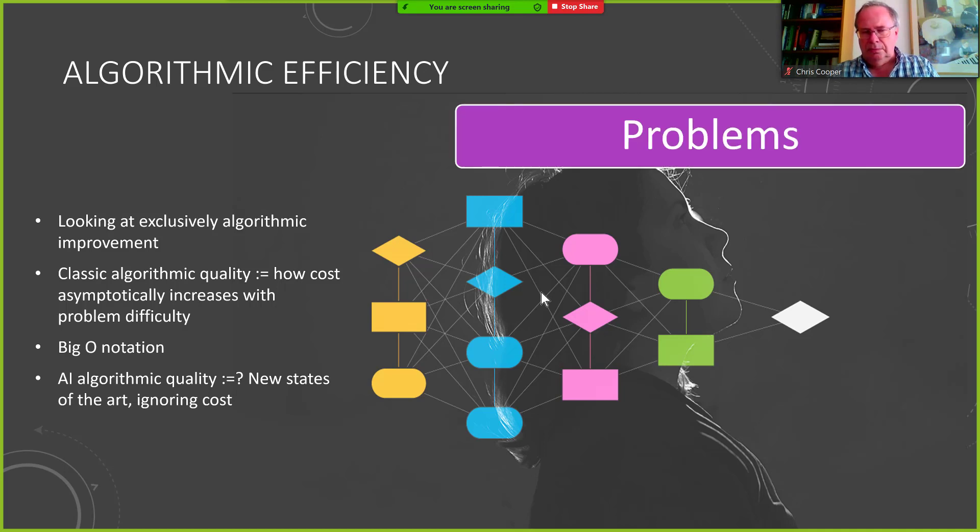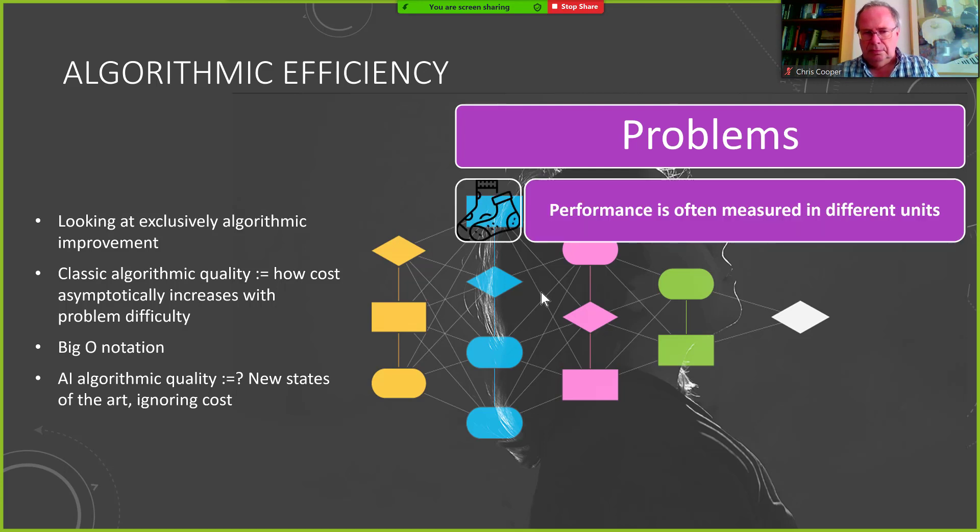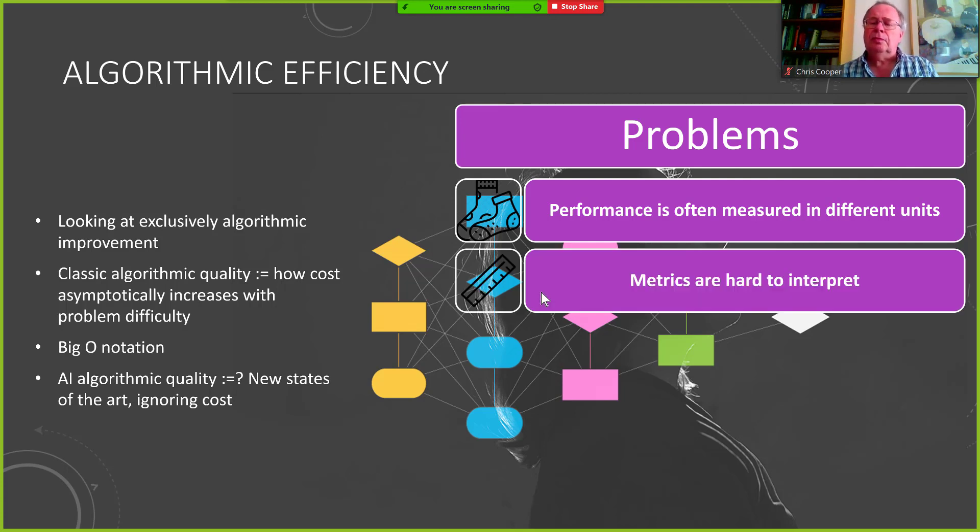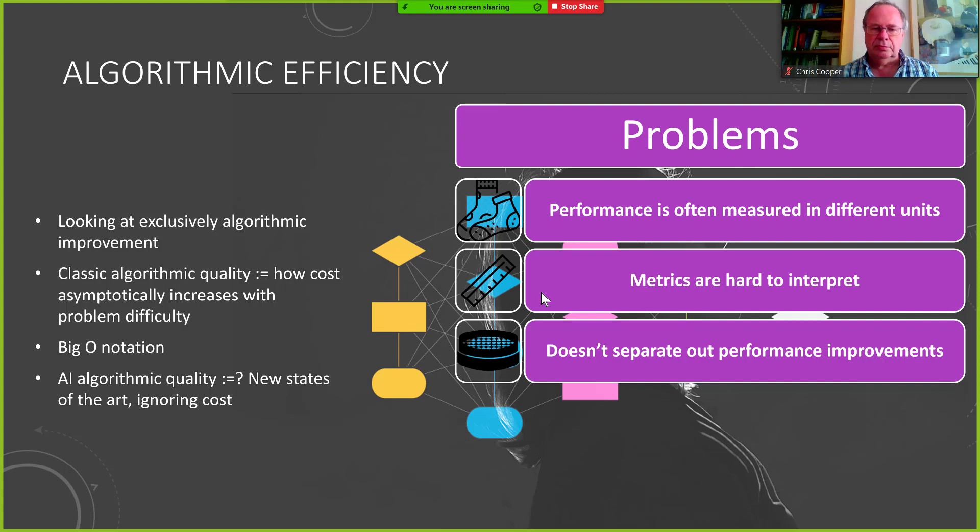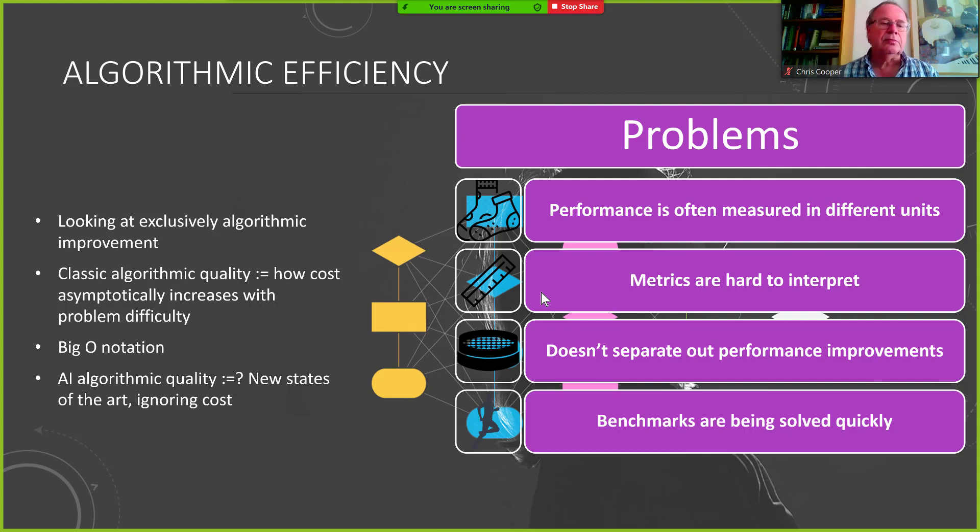The way we normally see improvements in algorithm quality being reported is new states of the art that now we can solve this problem and nothing basically about the cost. And that's really bad for several reasons. The first reason is that when we do have performance measurements, they are in different units. There's no really standardized way of reporting this. The metrics that we get are hard to interpret. If one person says we can solve this problem in translation and the other person says we can solve this in Go and a third person has a result in image classifications, then it's really hard to merge them together in any way.